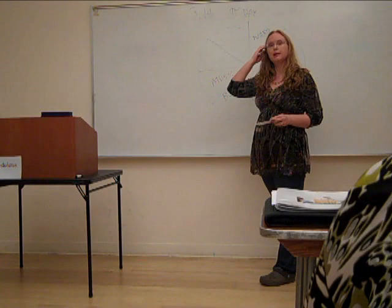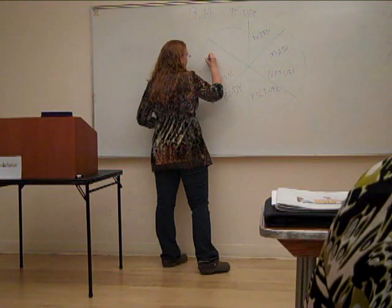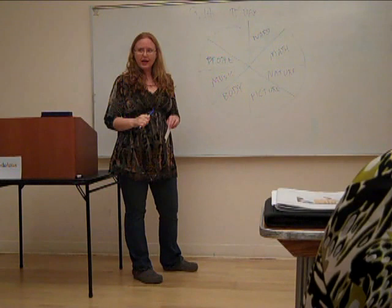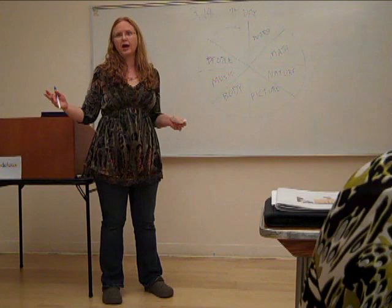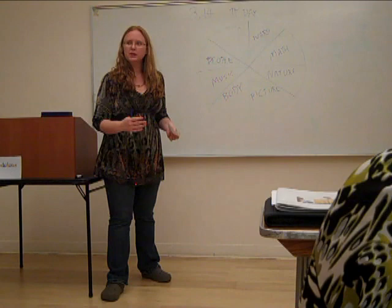The next type is interpersonal, otherwise known as people smart. These people are often extroverts. They learn best when they are with other people. They understand other people. They have lots of friends. They make new friends easily and they maintain those relationships for a lifetime because they understand how other people think. They understand them verbally and non-verbally.